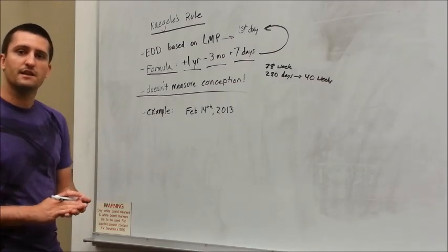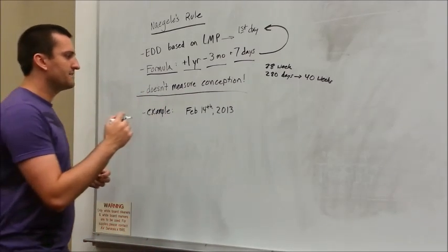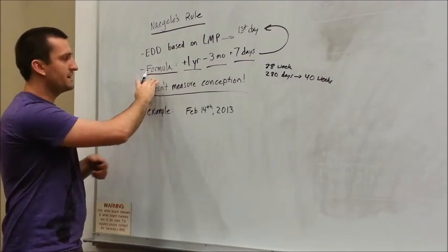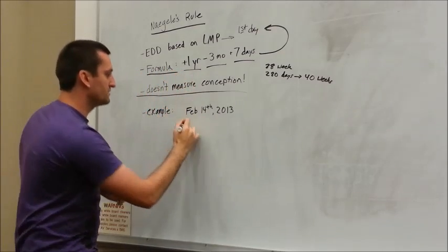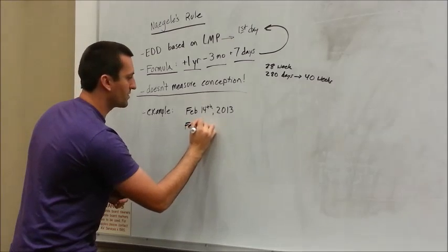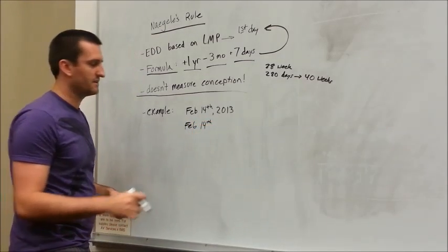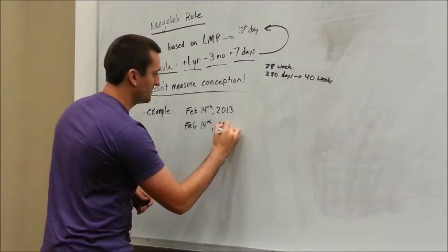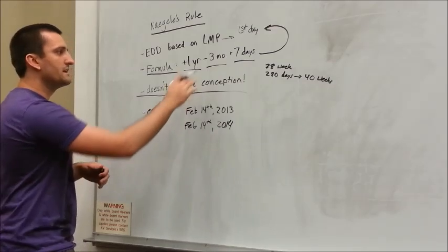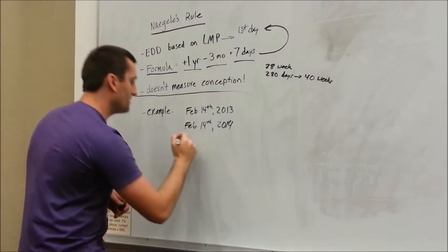And I say, I think you're going to have your baby on... I need to figure this out. So let's use Naegele's rule. The formula is plus one year. So February 14th again, I'm not taking into effect leap year, don't get me on the details. 2014. So that's our plus a year. Now we need to subtract three months. So January, December, November.